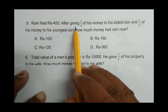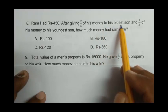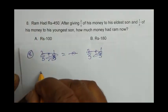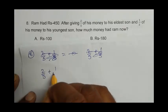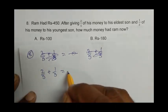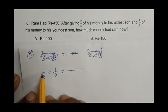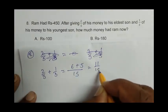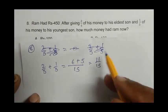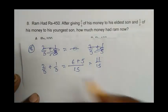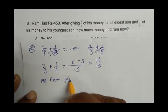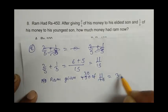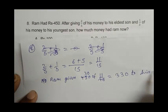Question number 8: Ram had Rs. 450. After giving 2/5 of his money to his eldest son and 1/3 of his money to his youngest son, how much money had Ram now? We add both fractions: 2/5 + 1/3 = 11/15. So 11/15 part he gave to his sons. Ram gives 450 × 11/15, that is 330 to his sons. Now Ram has 450 - 330 = 120. So C is the right answer.